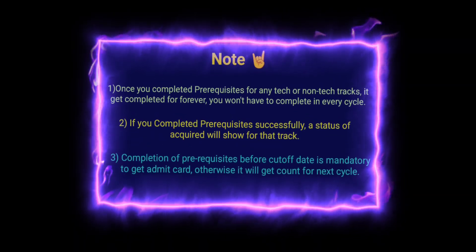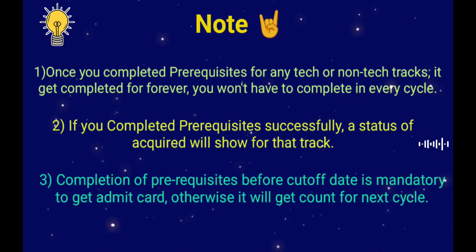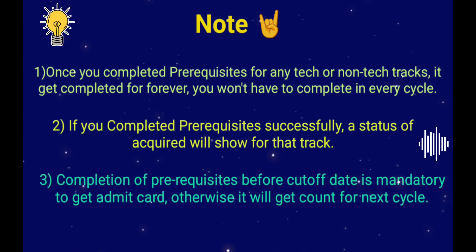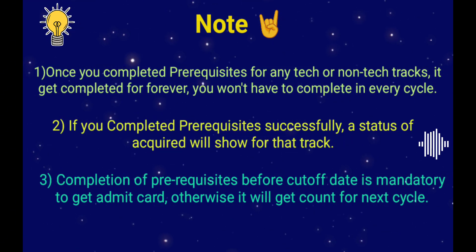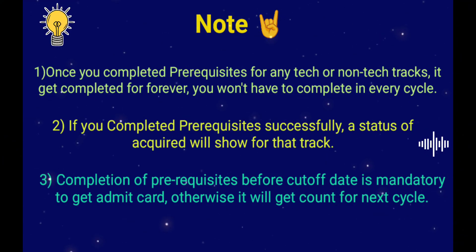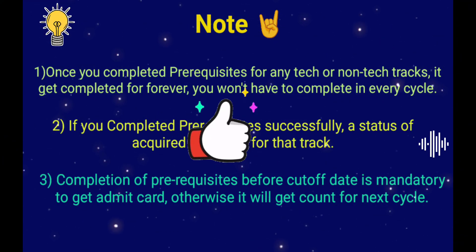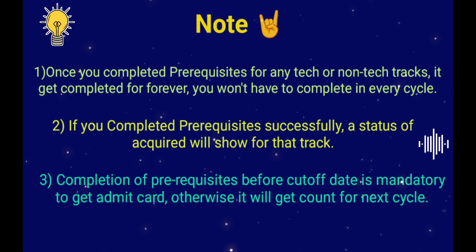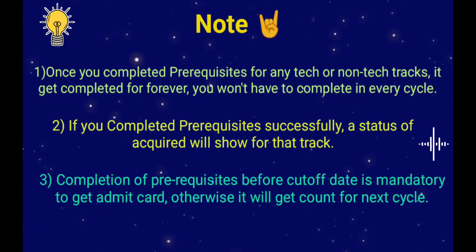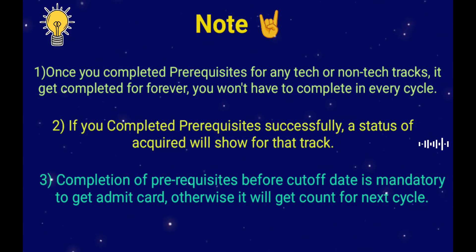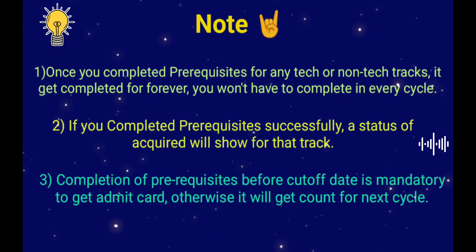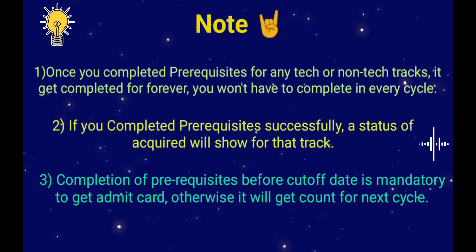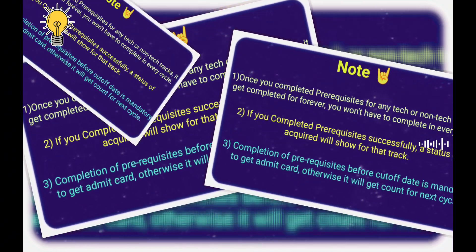Now let me tell you a few important points about prerequisite completion. First, once you complete the prerequisite for any tech track or non-tech track, it is completed forever — you won't have to complete it again every cycle. Second, if you complete the prerequisite successfully for any tech track or non-tech track, a status of 'Acquired' or 'Successful' will show in front of that track. To check whether you have completed it or not, just scroll to that track and see if it shows 'Acquired.' If it is not showing 'Acquired,' simply complete it and it will then show 'Acquired.'